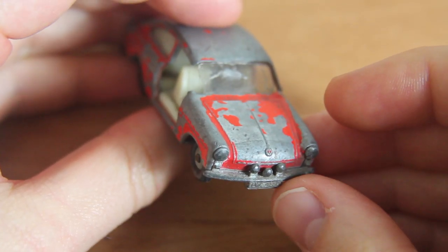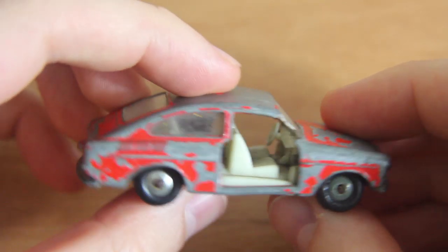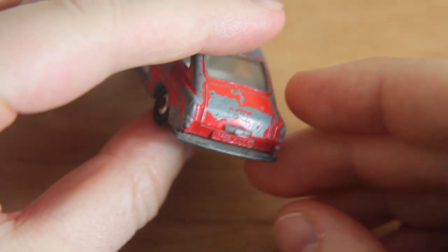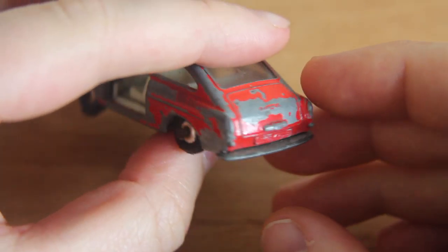Hello and welcome to DieCastRestos. My name's Jason and this is the 67B Volkswagen 1600 TL.